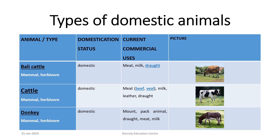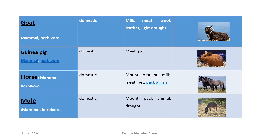Donkey: mammal, herbivore; domestic. Commercially used for mount, pack animal, draught, meat, and milk. Goat: mammal, herbivore; domestic. Commercially used for milk, meat, wool, leather, and light draught.